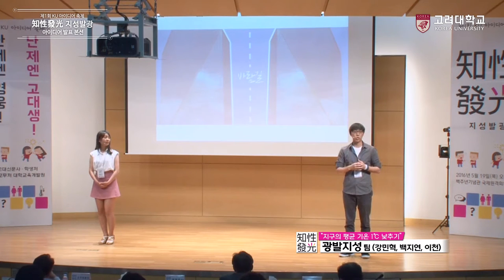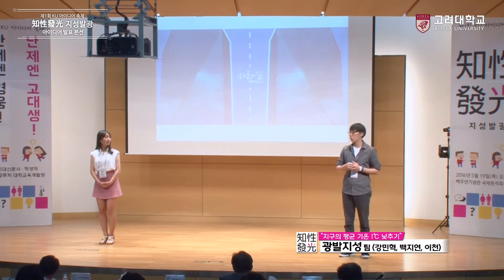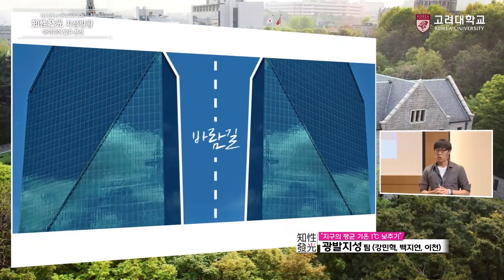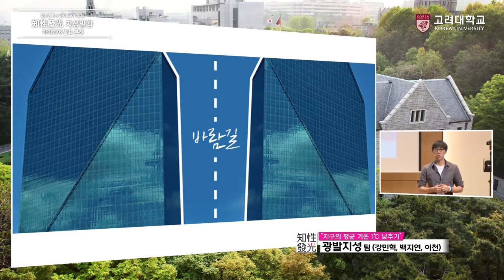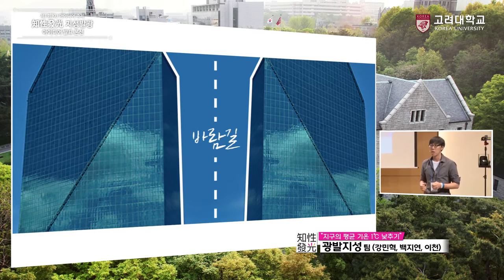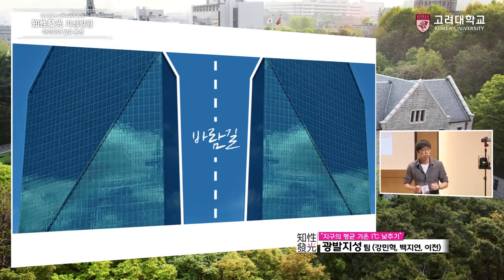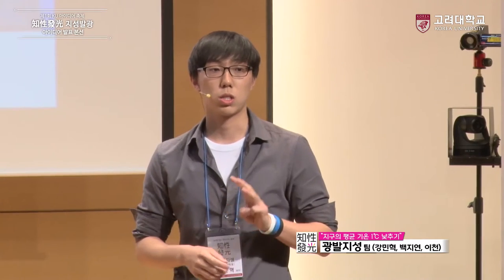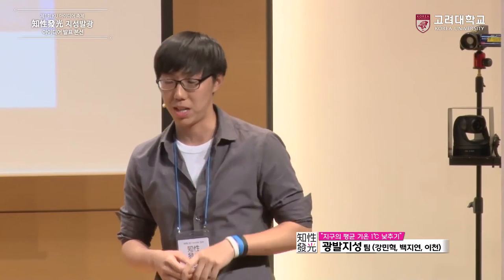저희는 그 문제에 대해서 해답으로 바람길을 제시하였는데요. 먼저 독일의 예시를 한번 들어보겠습니다. 여러분, 폭포 주변에 가거나 혹은 큰 강가에 가면 바람이 시원하게 부는 걸 느끼실 수 있죠? 이거는 바로 바람이 물을 따라 흐르려는 습성을 가지고 있어서인데요. 독일은 이런 점을 살려서 도시에 직경 30cm짜리 수로를 뚫었고, 덕분에 도시의 온도를 3도나 낮출 수 있었습니다.